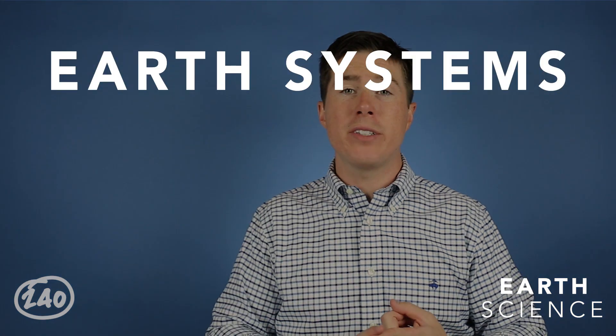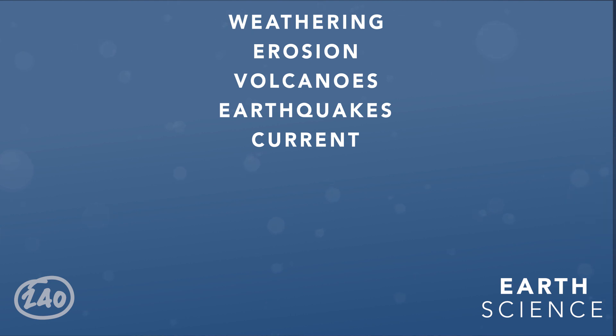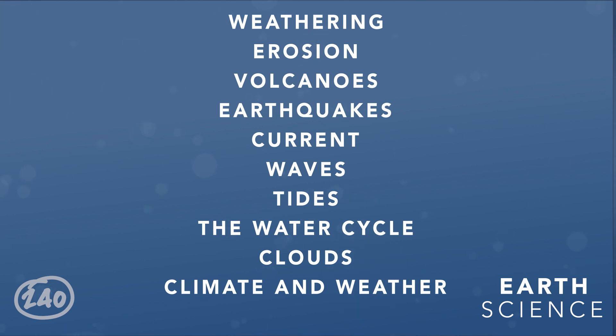Let's start with earth science. The three big concepts in the earth science section are earth systems, earth cycles, and space. For earth systems, it's really understanding the different layers of the earth, the crust, plate tectonics, weathering and erosion, and how that forms rocks. Important concepts include weathering, erosion, volcanoes, earthquakes, currents, waves, tides, the water cycle, clouds, and climate and weather.